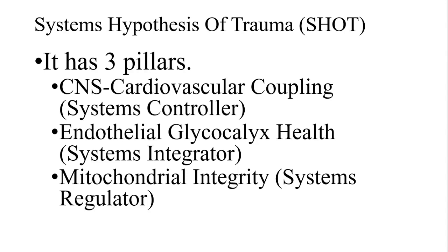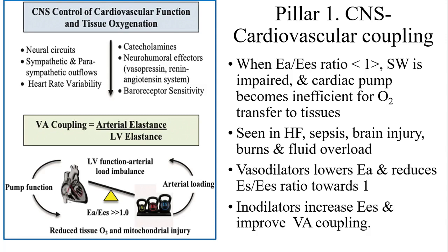Systemic psychosis of trauma — or SHOT — has three pillars: CNS and cardiovascular coupling, endothelial glycocalyx integrity, and mitochondrial integrity. Nobody will ask you this in an examination, but this is probably the future and where medicine will be in 20–25 years. Regarding neural circuits, parasympathetic and sympathetic nervous system, and heart rate variability — loss of heart rate variability is a problem. Catecholamines, neurotrophic factors, and baroreceptors are all implicated, and this is entering hemodynamic monitoring now.